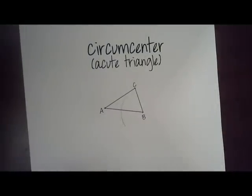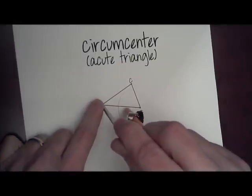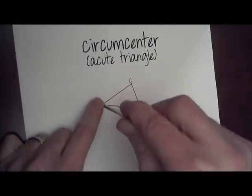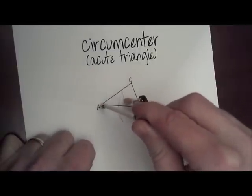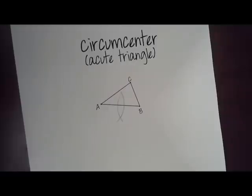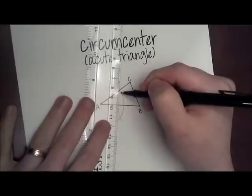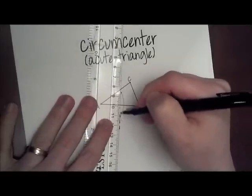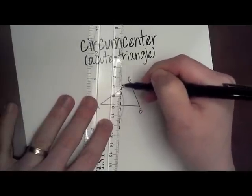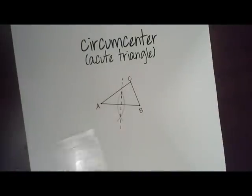I'll start with side AB, making sure my compass is open more than half the length of AB. I will construct a football on segment AB, which will create the perpendicular bisector, which is what we need. I'm going to draw a dotted perpendicular bisector of side AB.